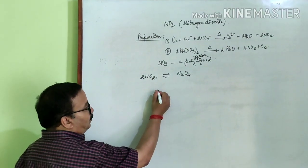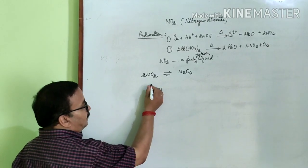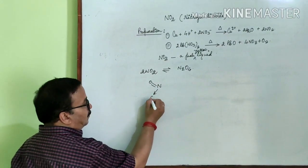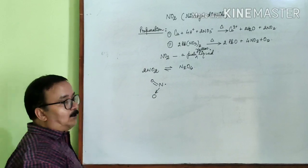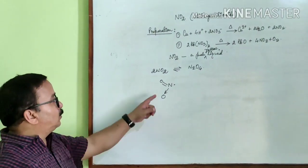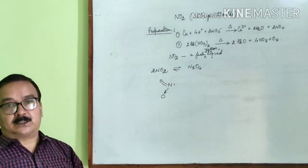The structure of NO2 is this. NO2 is an odd electron species.